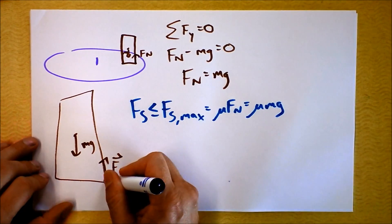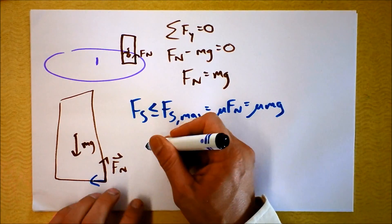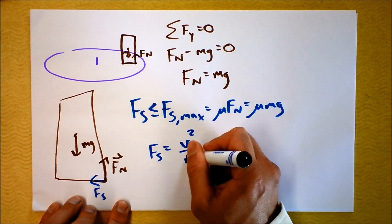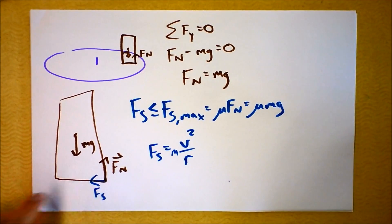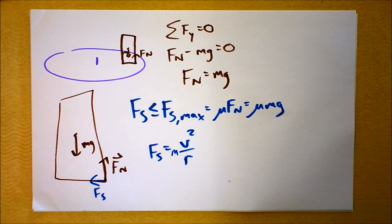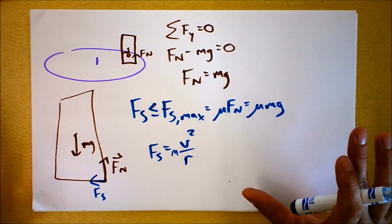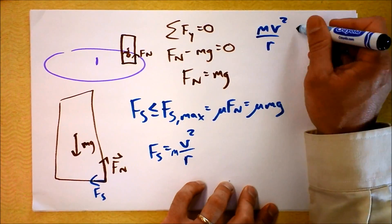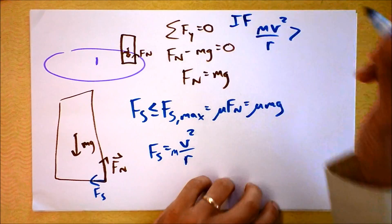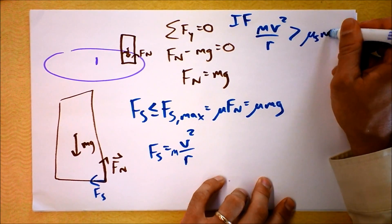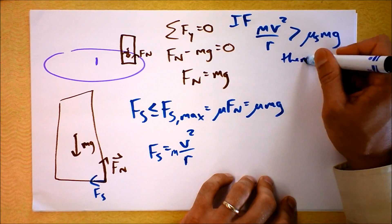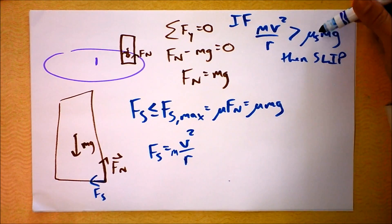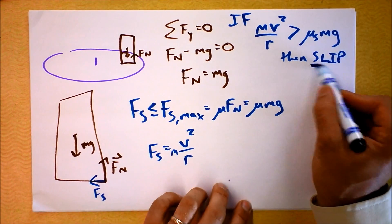If Fs is the force in this direction, then we know there's acceleration, and Fs is providing that acceleration. Fs equals mv²/r — that's the centripetal acceleration multiplied by mass, because that's the only unbalanced force. If mv²/r is greater than μ_s times mg, then we'll get slipping. The required centripetal force to keep it going in a circle is greater than the static force of friction can provide, in which case we would get slipping.